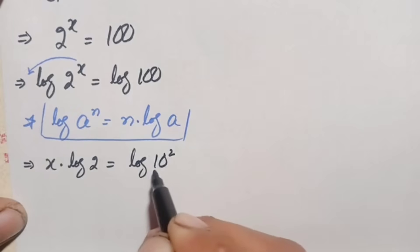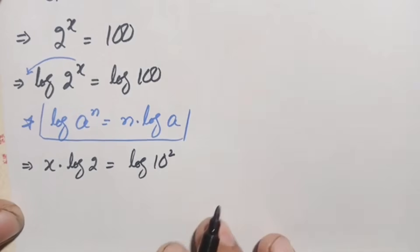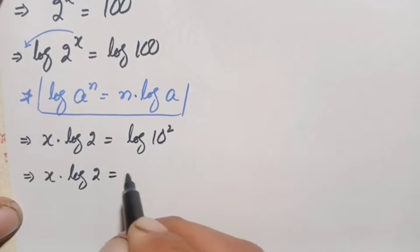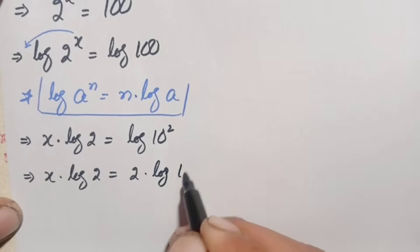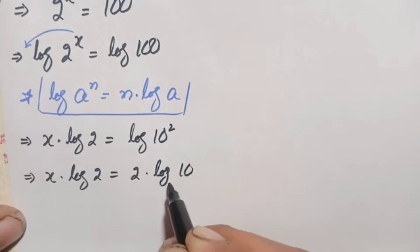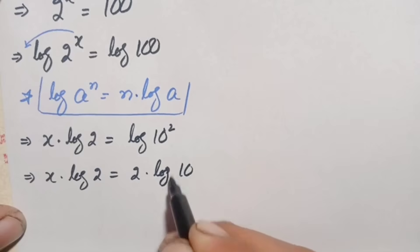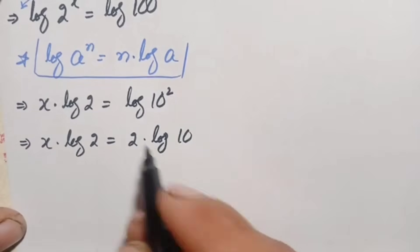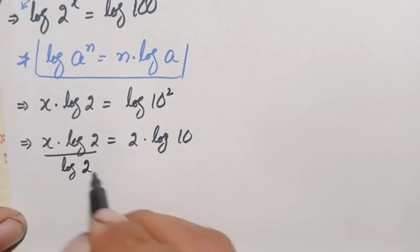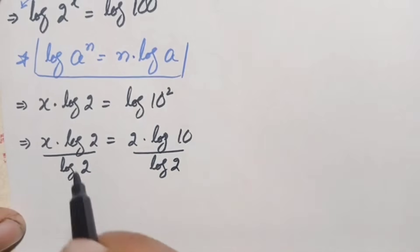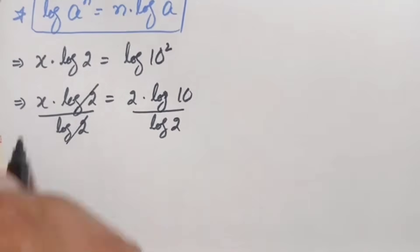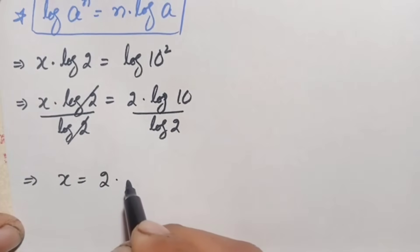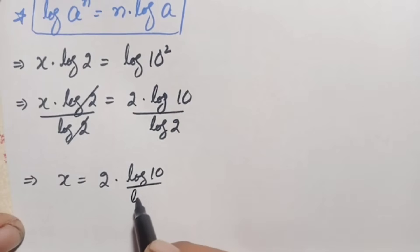We can write 100 as 10 squared, i.e., 10 to power 2. Now on the right hand side we use the same identity and move the 2 to the front, so this becomes x times log of 2 equals 2 times log of 10. We can replace log of 10 (base 10) with 1, but instead let's divide both sides by log of 2. So x equals 2 times log of 10 divided by log of 2.